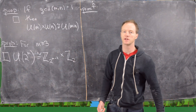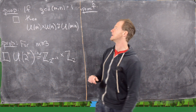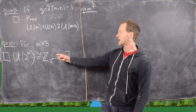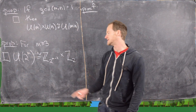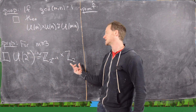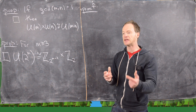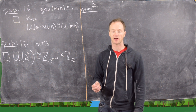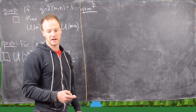Now we look at two important propositions about the structure of the group of units. The first says that if GCD(m, n) equals 1, then U(m) cross U(n) is isomorphic to U(mn). The second says that if m is greater than or equal to 3, then U of 2 to the m is isomorphic to Z mod 2 to the m minus 2, cross Z mod 2 — a direct product of cyclic groups. Using these, we can factor any integer into primes and decompose its group of units into a direct product of cyclic groups.